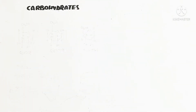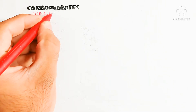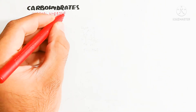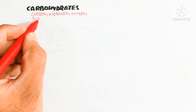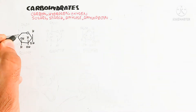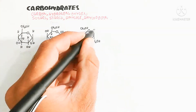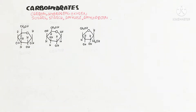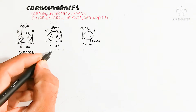Carbohydrates contain carbon, hydrogen, and oxygen, and are in the form of simple sugar or starch — amylose or amylopectin. The basic monomeric structures are glucose, galactose, and fructose.